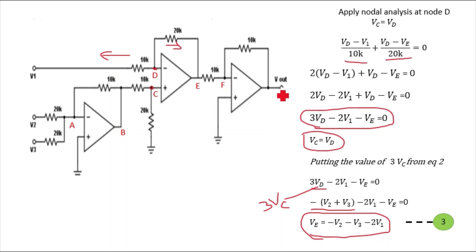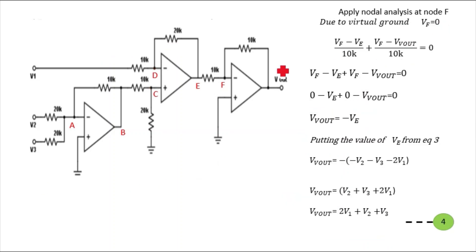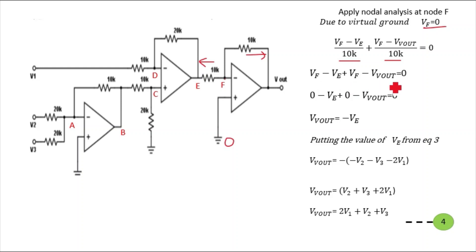Now applying nodal analysis at node F. Due to virtual ground, VF = 0. So: (VF − VE)/10K + (VF − V-out)/10K = 0. Both resistances are 10K, so: (VF − VE) + (VF − V-out) = 0. Putting VF = 0: −VE + (−V-out) = 0, which gives V-out = −VE.